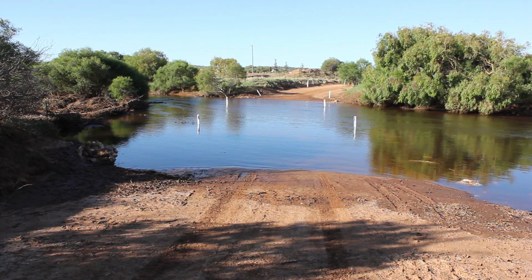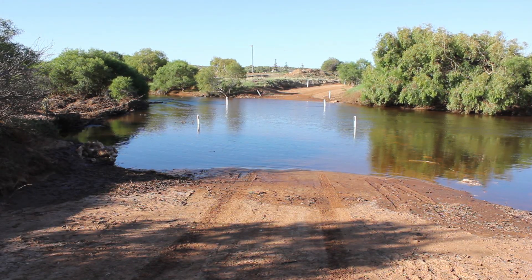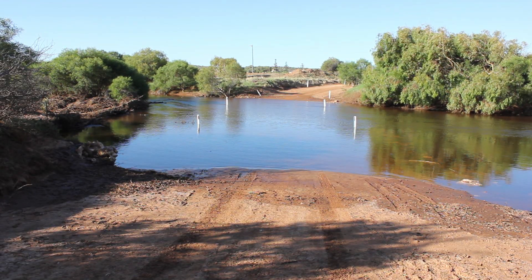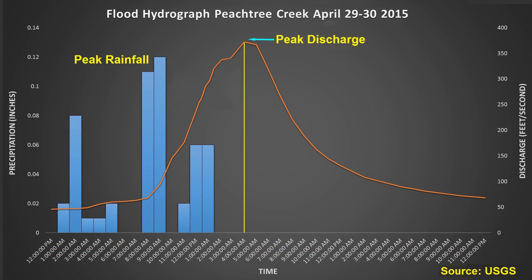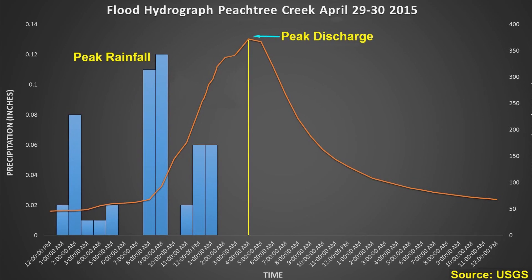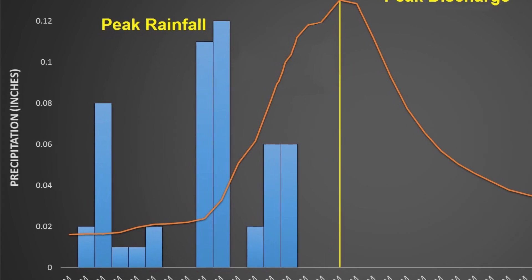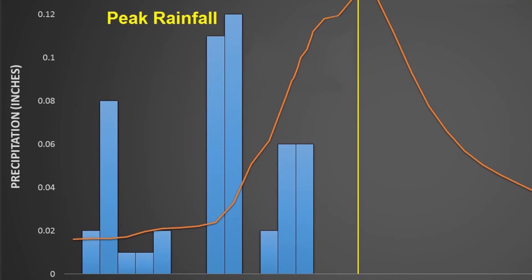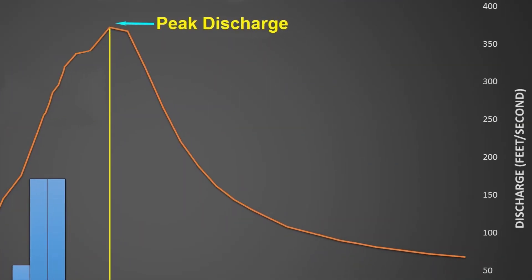Any sudden increase in the amount of water traveling down a river will cause flooding. This discharge of a river can be displayed on a graph called a flood hydrograph. This graph displays the amount of rainfall as a bar graph and the discharge of the river as a line graph.